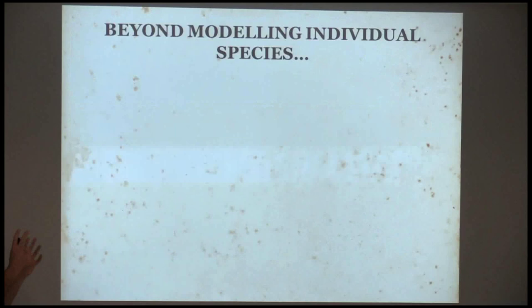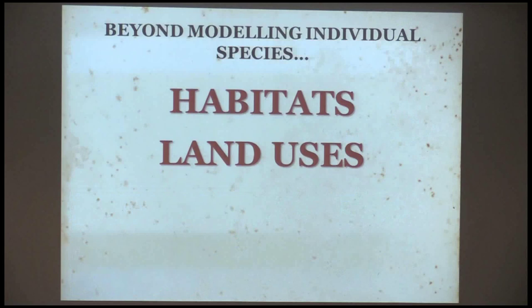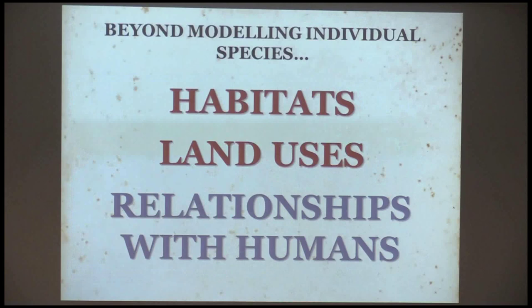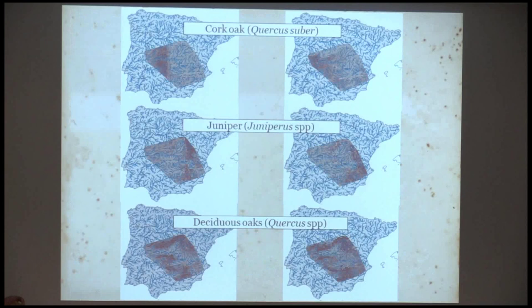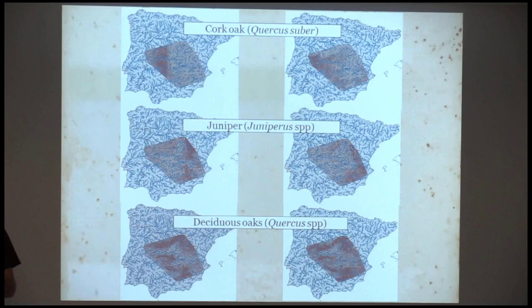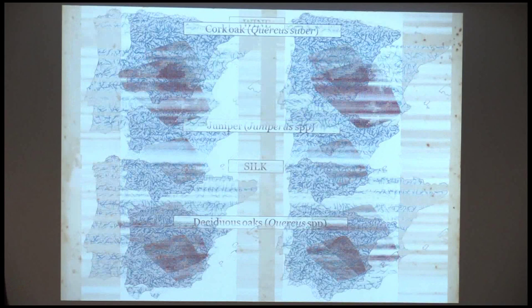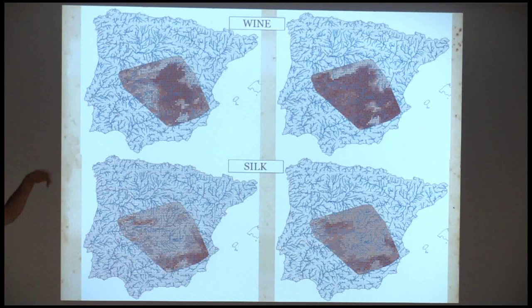These are examples on single species, but our next steps with the Madoz are modelling habitats and land uses, and also introducing human population to understand interactions with humans. We can model distributions from both the 16th and 19th centuries for several species, and then use a multivariate approach to mix distributions of vegetation and crops to produce land cover and land use maps. These are also for crops — for example, wine production in the 16th and 19th centuries, and the silk production, which is quite similar between the two datasets.